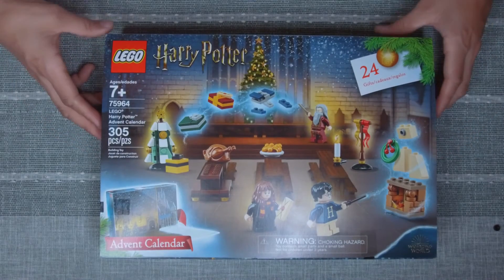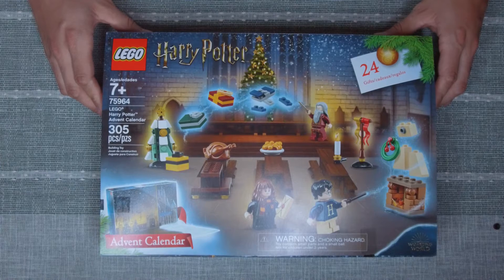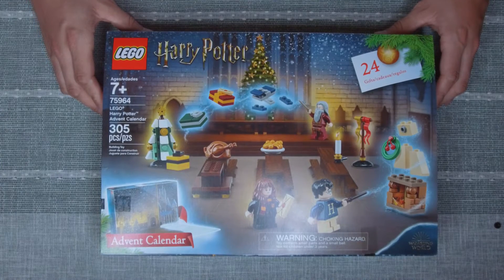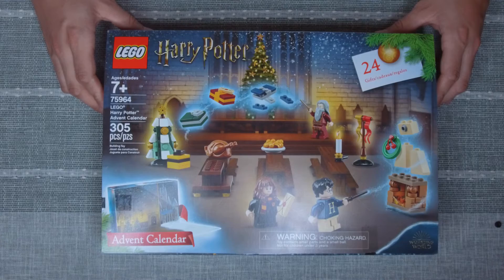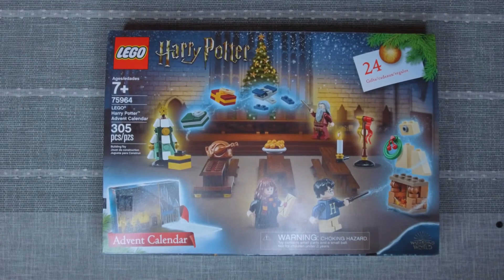Welcome back. Today we're going to do the Lego Harry Potter advent calendar for 2019. This is set number 75964. Okay, let's get building.